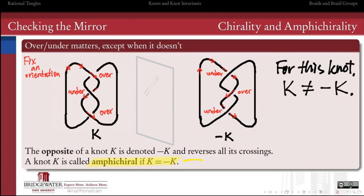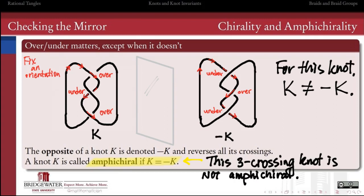Yet, there are some knots out in the world which are the same as their mirror image. When they look in the mirror, they see exactly themselves, not the opposite of themselves. We call those knots amphichiral, which is our favorite word of the day. And this knot is not amphichiral.